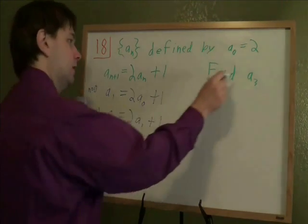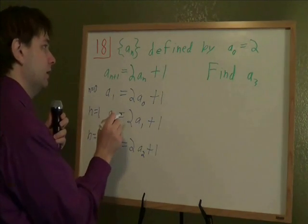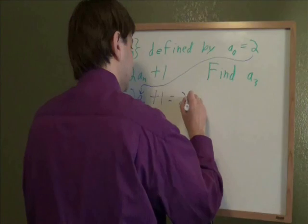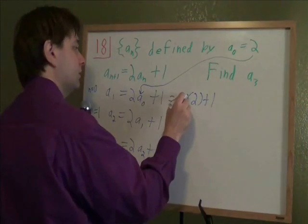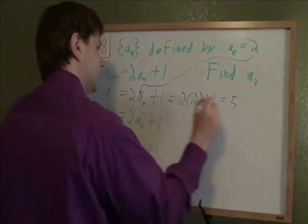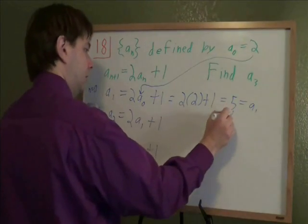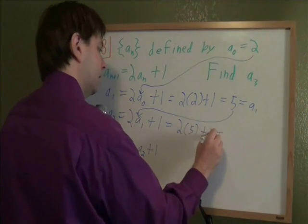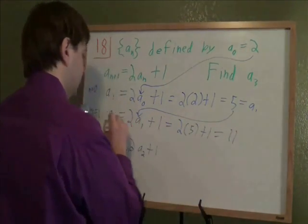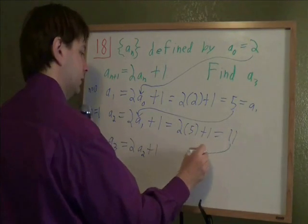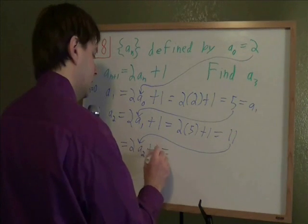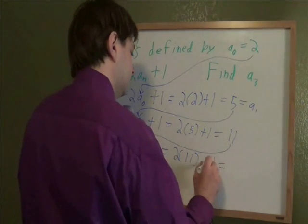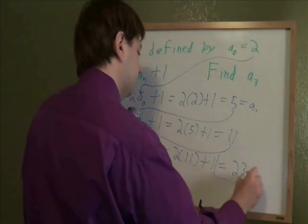And these are all the formulas we'll need because we've gotten to a3, which is what we're looking for. And now we'll just start plugging into these. They told us that a0 is 2, so we plug that in for a0. 2 times 2 plus 1. 2 times 2 is 4, plus 1 is 5. So 5 is a1, and we plug that in for a1 in the next formula. So 2 times a1, which we just figured out is 5, plus 1. 2 times 5 is 10, plus 1 is 11, and that's the new a2. So we take 11, which is a2, and plug it in for a2 right there. a3 now equals 2 times 11 plus 1. 2 times 11 is 22, plus 1 is 23, and that is what a3 equals, 23.